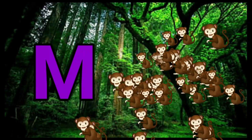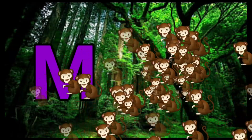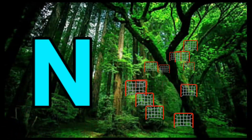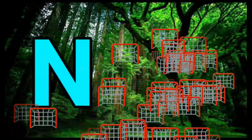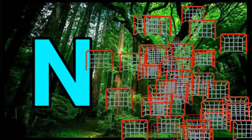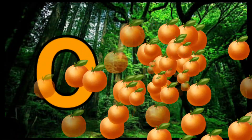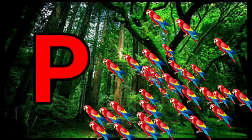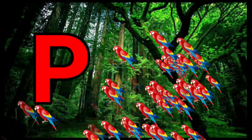M is for [word missing]. N is for Net, N-N-Net. O is for Orange, O-O-Orange. P is for Pet, P-P-Pet.